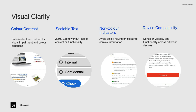We adjusted text to ensure sufficient colour contrast with the background, vital for users with visual impairments or colour blindness. We also ensured that text could be zoomed to 200% without loss of content or functionality, allowing users to enlarge text as needed. We avoided relying solely on colour to convey information.